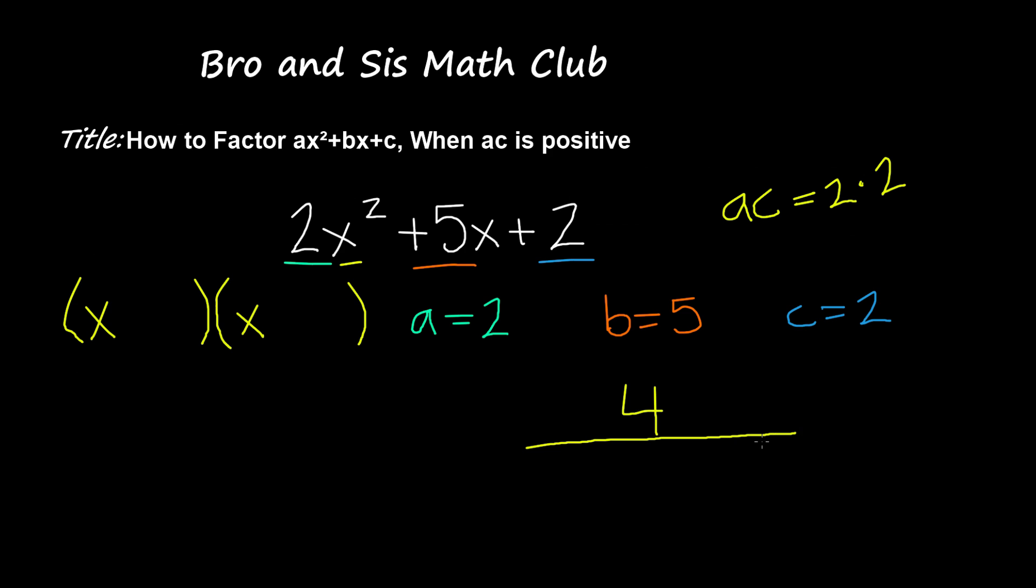So once we know that, what we're going to do is find factor pairs of 4 that when multiplied give us 4, but when added give us 5. So factor pairs of 4 are 4 and 1, and 2 and 2.